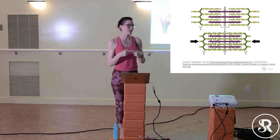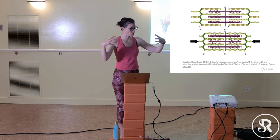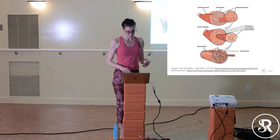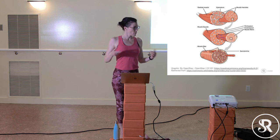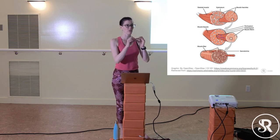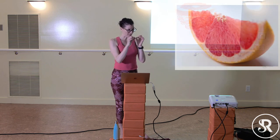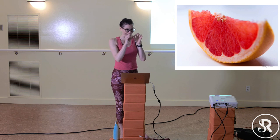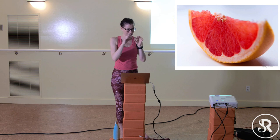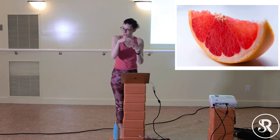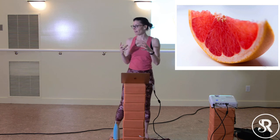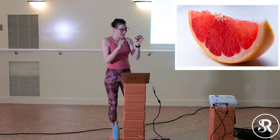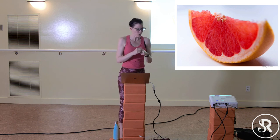One muscle fiber contracting alone won't do much — they contract as a group. A nice analogy is a grapefruit or orange: the smallest piece of juice is surrounded by connective tissue, then bigger pieces are surrounded by more connective tissue, then a slice surrounded by its sleeve, and all surrounded by the rind. That's kind of what your muscles are.